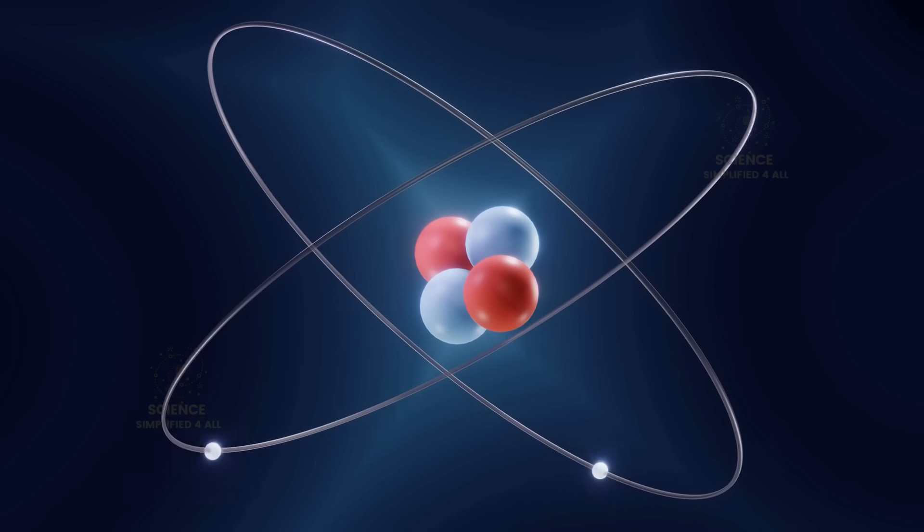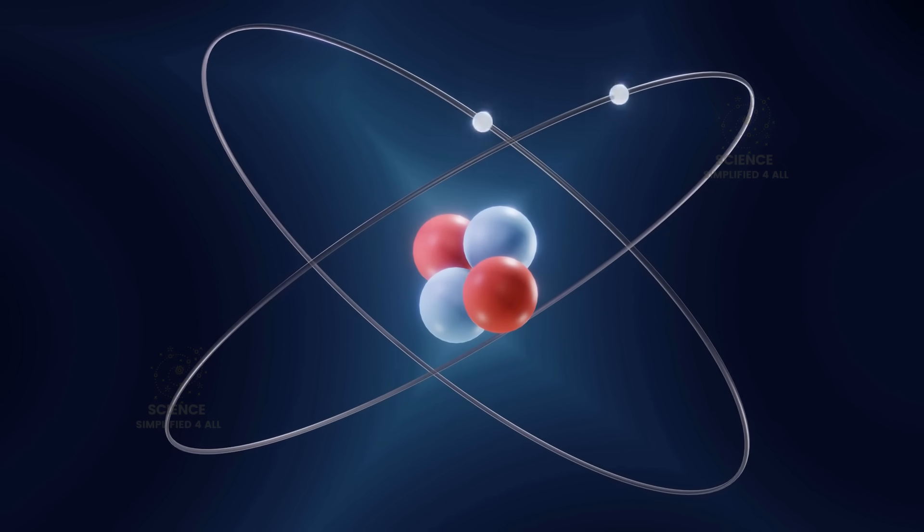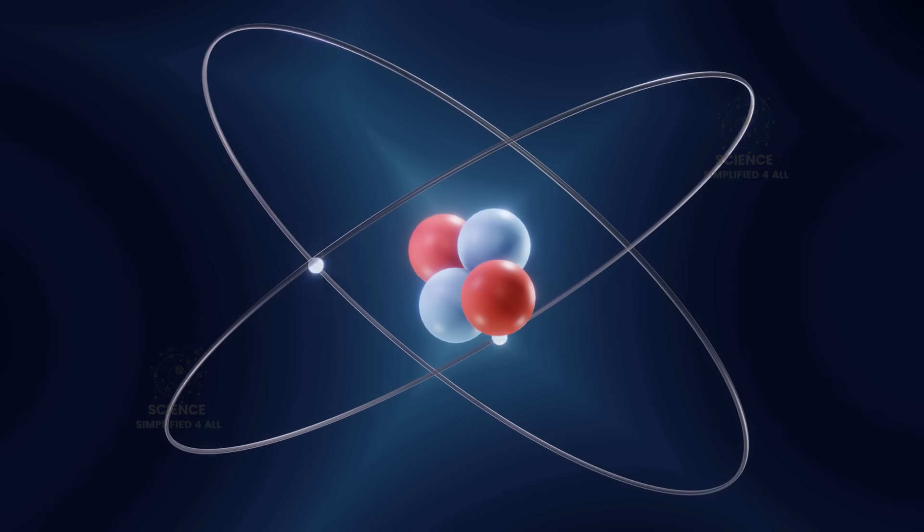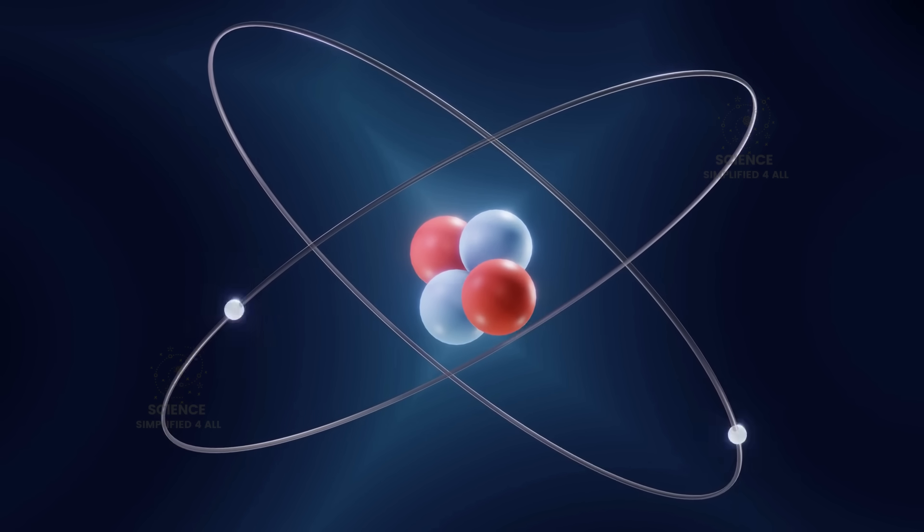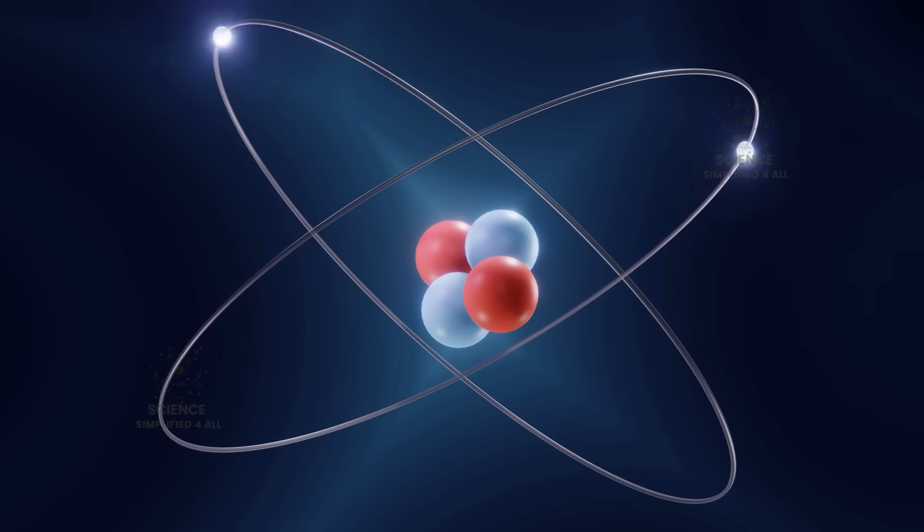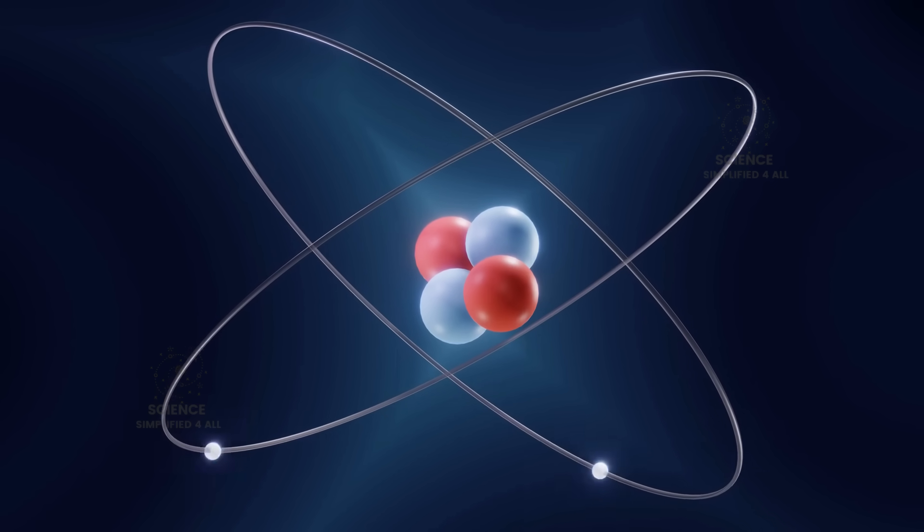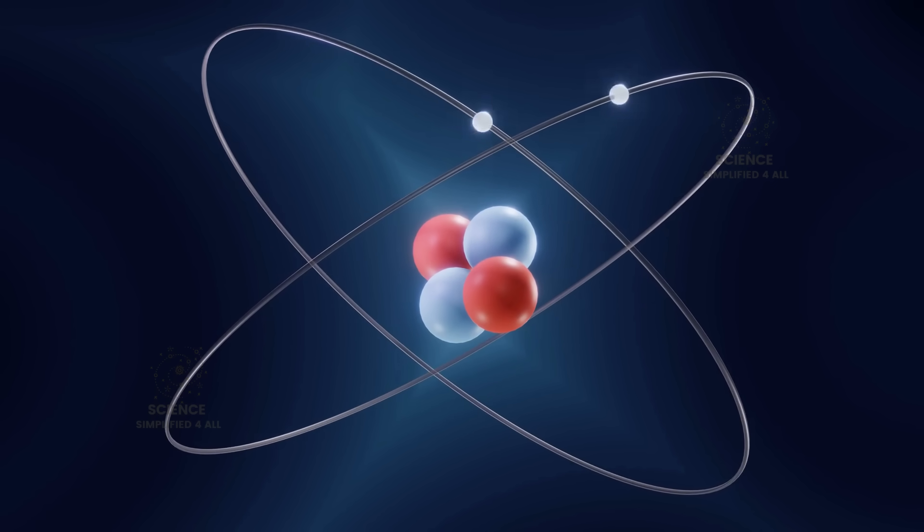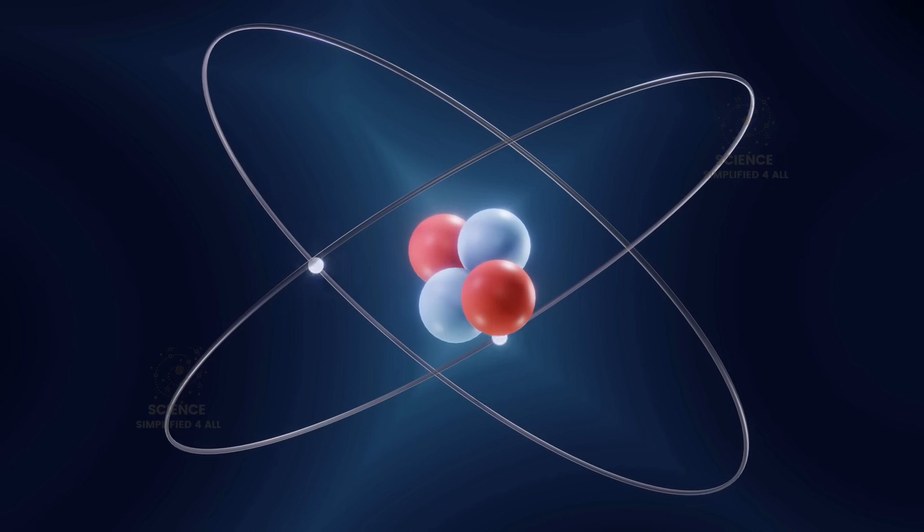For example, a helium atom contains two electrons, two protons, and two neutrons. Each of these particles is a fermion. But since they are paired, their spins cancel each other out. As a result, the entire helium atom behaves as a boson.